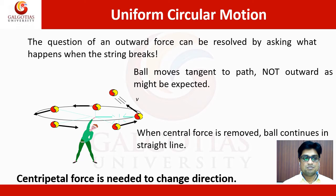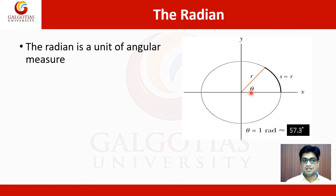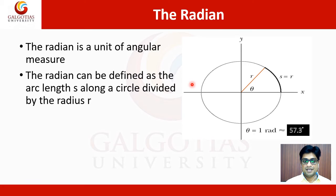Let's define some basic concepts of uniform circular motion. The first is the radian. If an object is moving in uniform circular motion and moves from one point to another, the radian measures the angle. The radian is a unit of angular measure, defined as the arc length s divided by the radius r of the circle. Mathematically, theta equals s upon r. The value of one radian is 57.3 degrees.